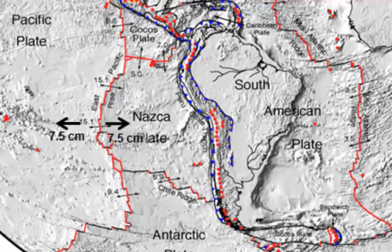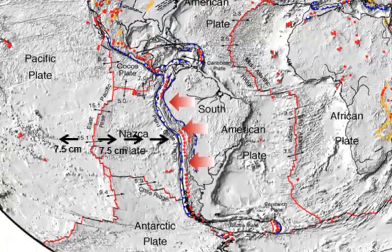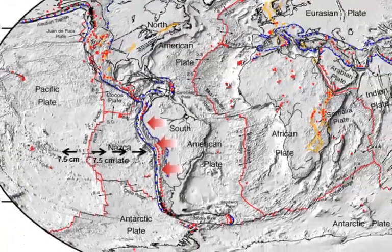Notice too that the NASCA plate is moving toward the trench that marks the western limit of the South American plate. The NASCA plate will actually get a little smaller each year as South America will slowly override its eastern margin, forcing the trench to migrate to the west and steadily reducing the size of the NASCA plate. A similar process is taking place in other locations.